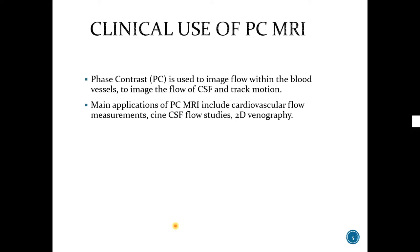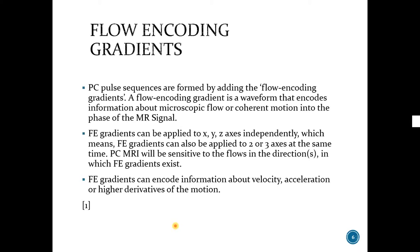Flow encoding gradients are very crucial in PC MRA because PC pulse sequences are formed by adding the flow encoding gradients. These gradients encode the information about flow or motion into the phase. Flow encoding gradients can be applied in x, y, or z directions independently, so they can be applied in 2 or 3 directions. In that case, PC MRA will be sensitive to the flows in the directions in which flow encoding gradients are applied. Flow encoding gradients can encode information about velocity, acceleration, or higher derivatives of the motion.